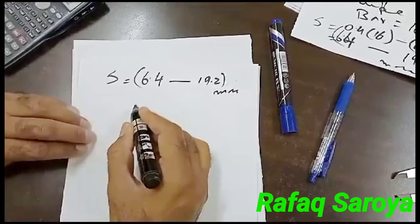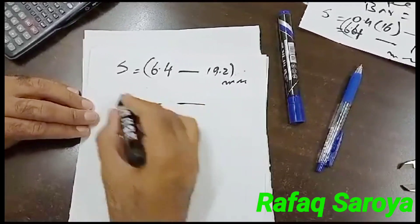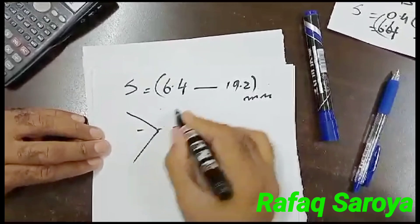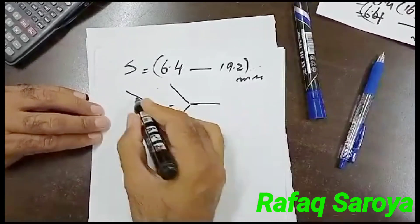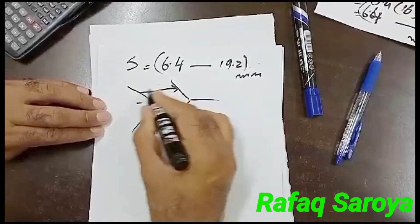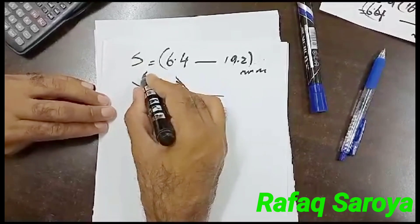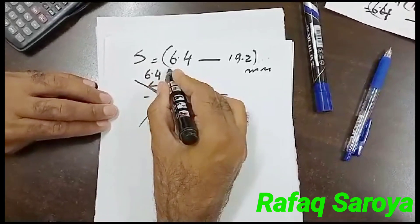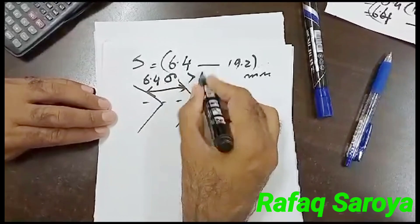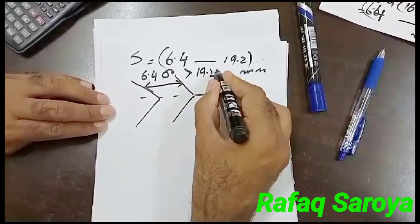What is the meaning of this? Let me tell you. It means if my one rib is at this position and other rib is at this position, this spacing can be either 6.4 or less than 19.2mm.